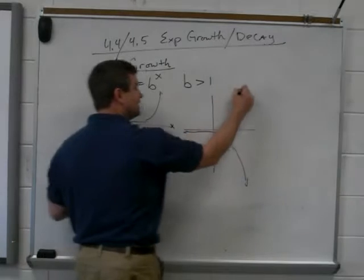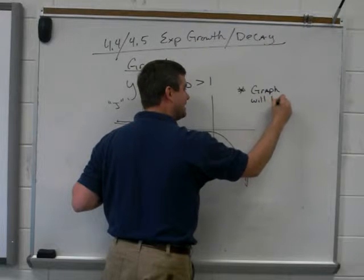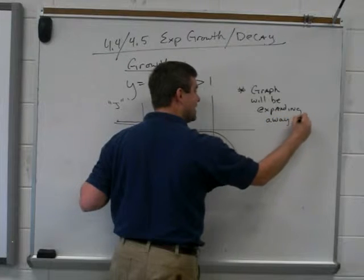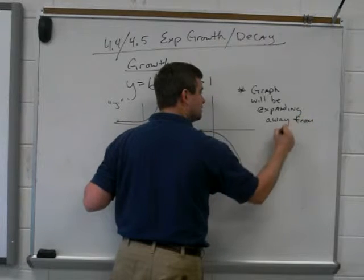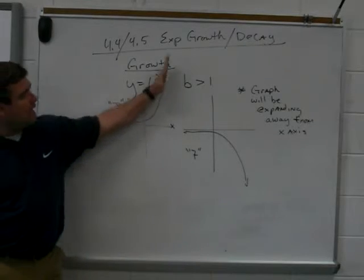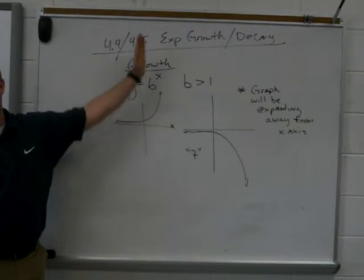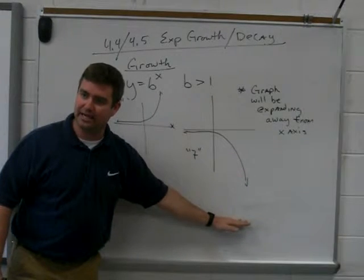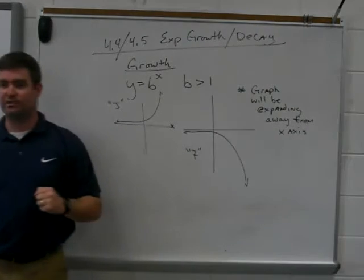Well, it is because you have to look at it in relation to the x-axis. Growth, and you should write this down, the graph will be expanding away from the x-axis. So if I'm talking about exponential growth, it's getting away from the x-axis. It's growing. As I read it from left to right, it's growing. It's getting away from the x-axis. Same thing here. Even though it's getting smaller and it's going down here to negative infinity, it's getting away from the x-axis. So technically, both of these are exponential growth.